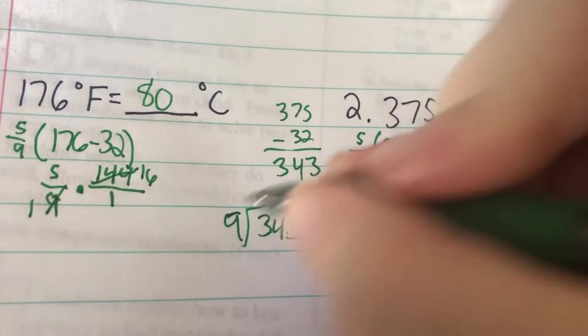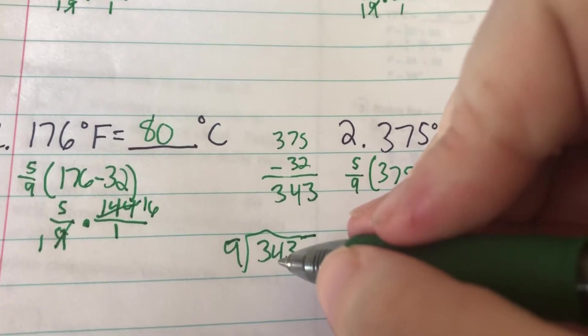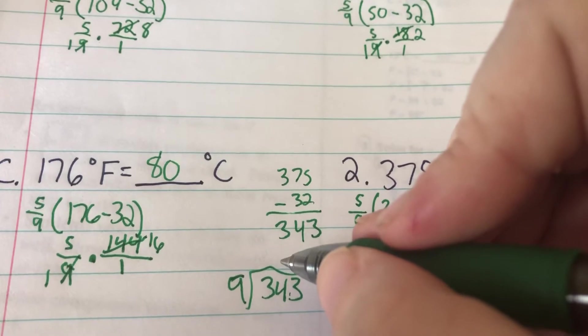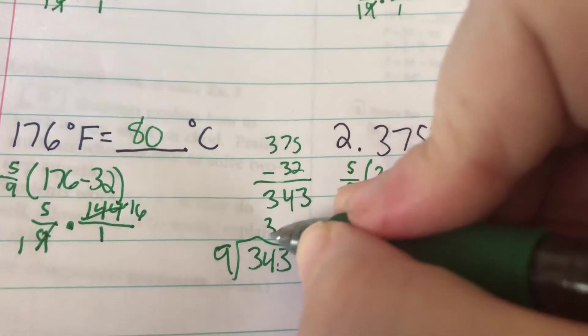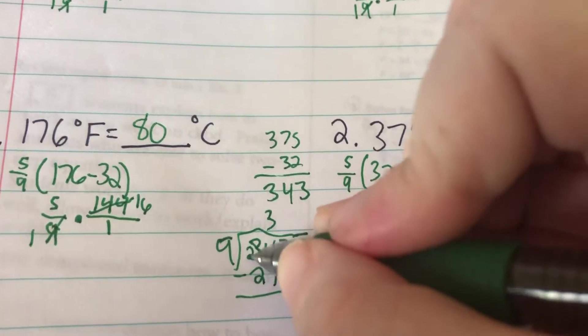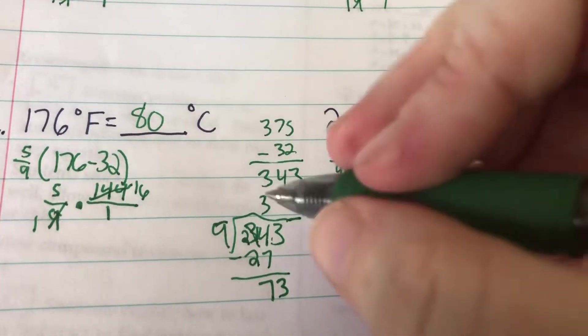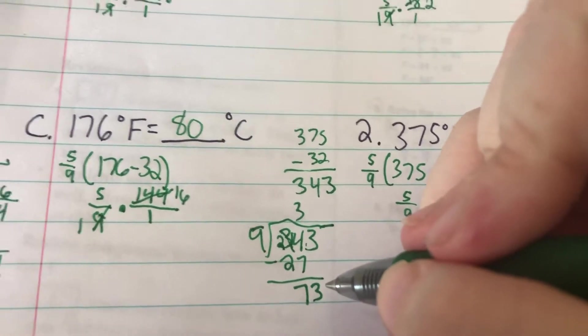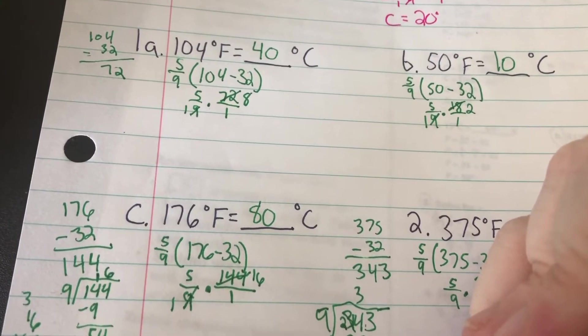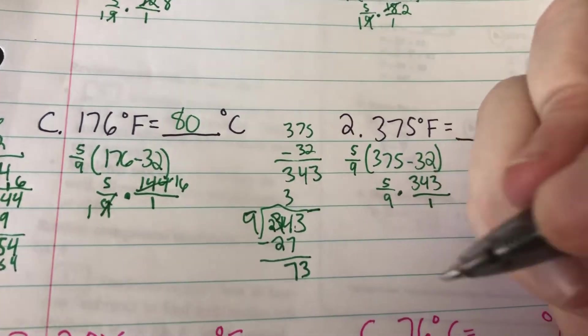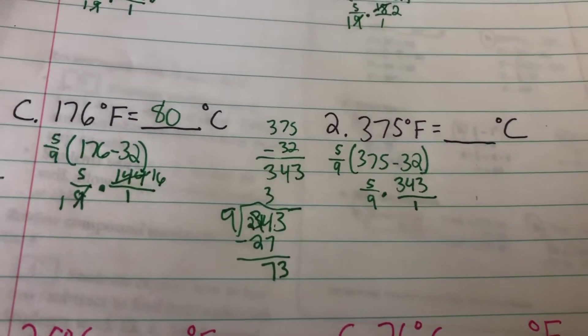9 doesn't go into 3, but it does go into 34. That is going to be 9 times 3 is 27. 14 minus 7 is 7. Bring down my 3. 9 into 73. We just talked about 9 going into 72, which was 8. So 73 would not be even. This is going to be a long one. That's okay, we'll be able to simplify it later.